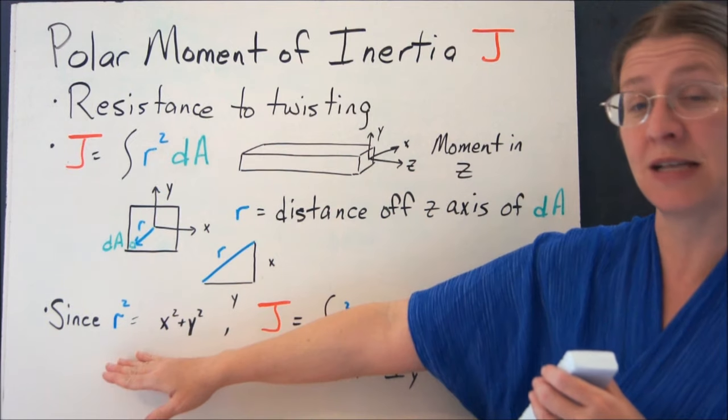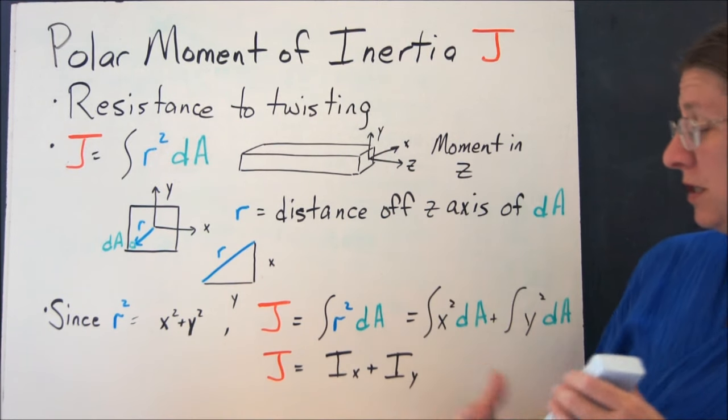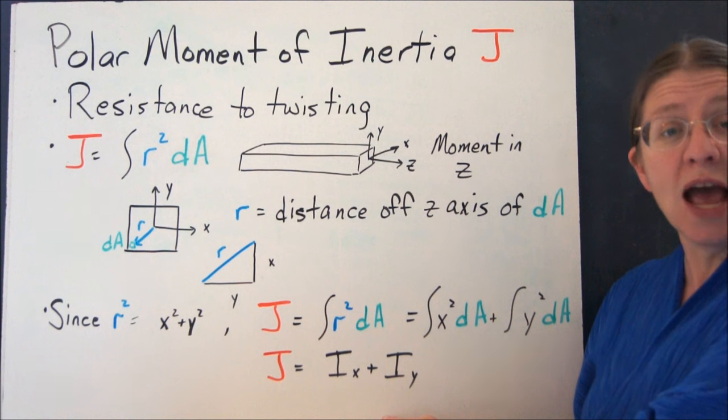So R² is x² plus y². If you distribute that through your integral, what you're showing is that J is the sum of the two moments of inertia, Ix and Iy.